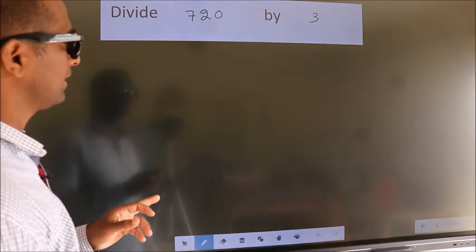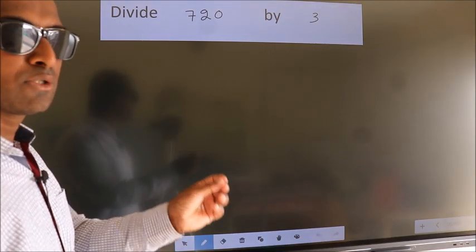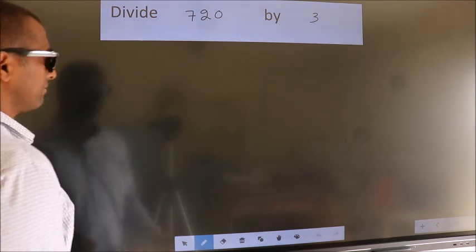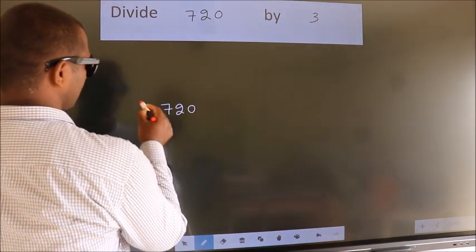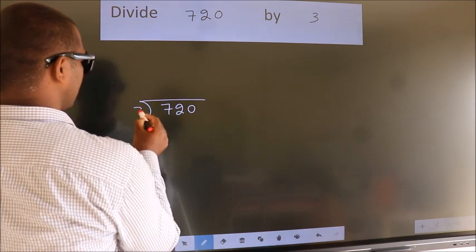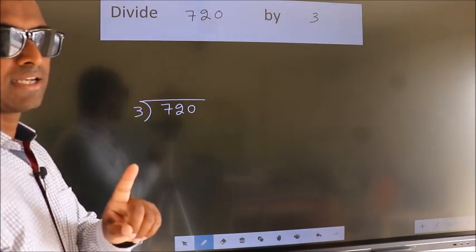Divide 720 by 3. To do this division, we should frame it in this way. 720 here, 3 here. This is your step 1.